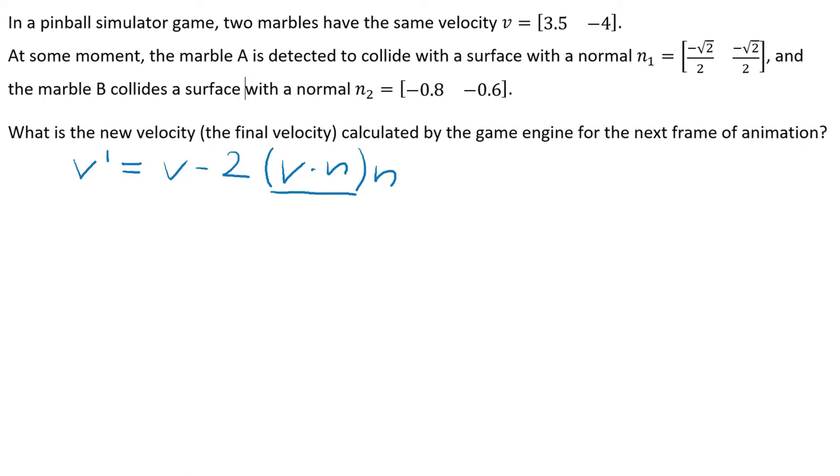And I will start all the calculations from v dot n. So v is 3.5 negative 4. And I will calculate two different dot products. So it will be shown here twice. And then I have a negative square root of 2 over 2, negative square root of 2 over 2. And here is negative 0.8, negative 0.6.